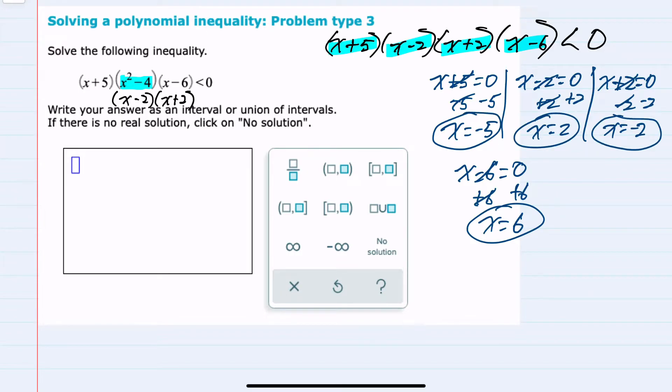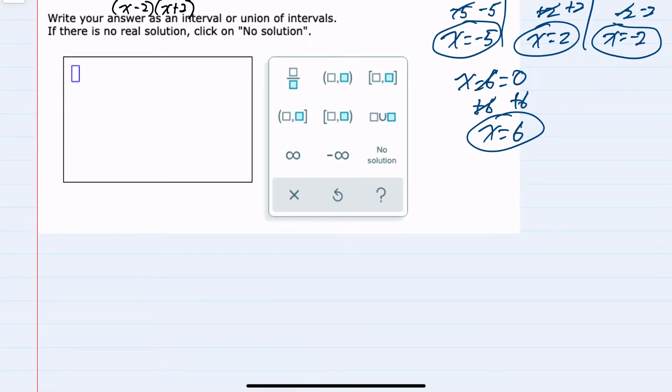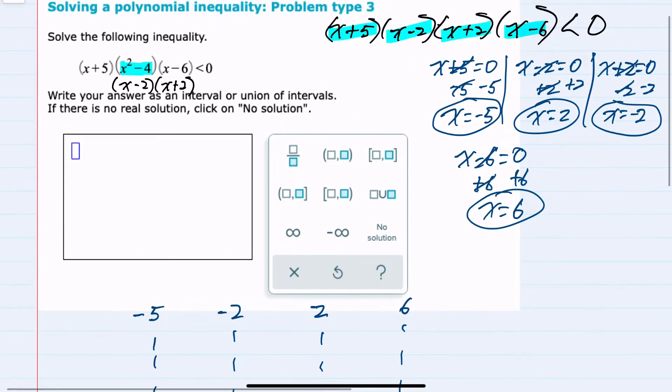To determine where this product is going to be less than zero, I'm going to create a table, and I'm going to list each one of these four values from smallest to largest. So I have negative 5, negative 2, a positive 2, and a positive 6. And along the left-hand side, I'm going to express each one of these factors.